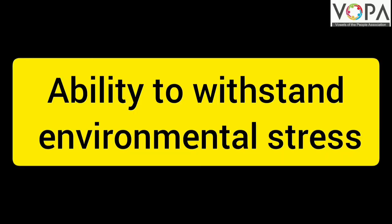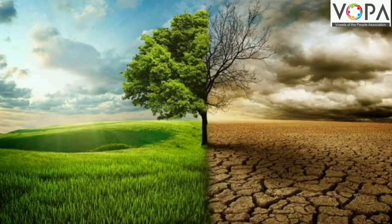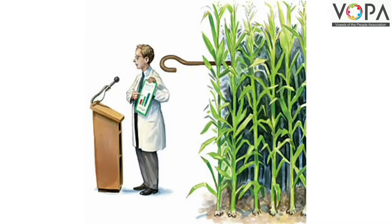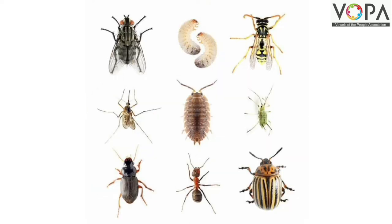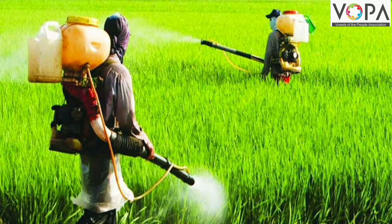Second, ability to withstand environmental stress. Some naturally occurring varieties cannot withstand environmental stress like frequently changing temperature, wet and dry conditions, famines, and changing climate. However, GM crops can grow in any such adverse conditions, as GM crops are resistant to insect pests, pathogens, etc., and the use of harmful chemicals like pesticides can be avoided.